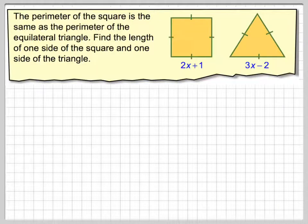The perimeter of a square is the same as the perimeter of an equilateral triangle. Find the length of one side of the square and one side of the triangle.